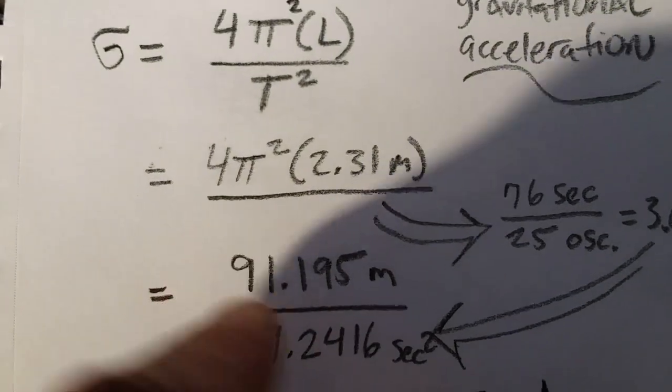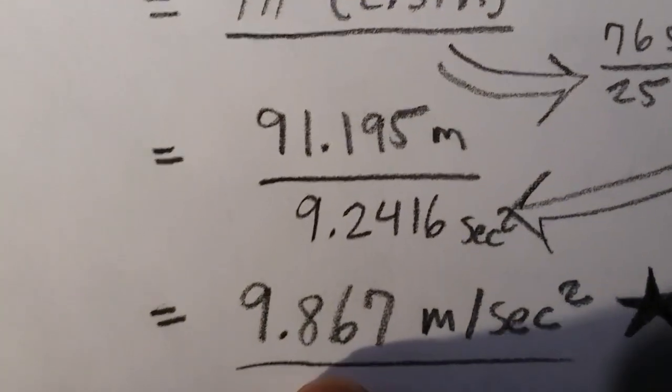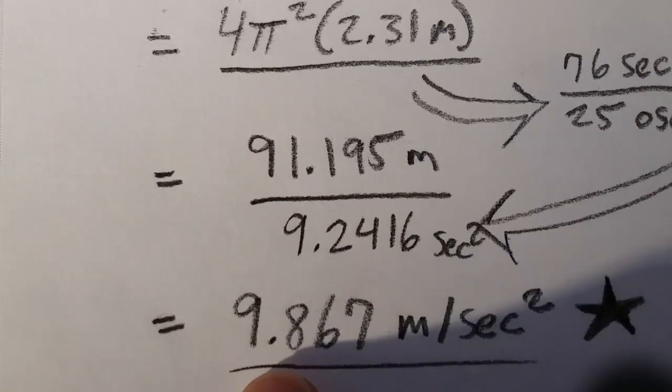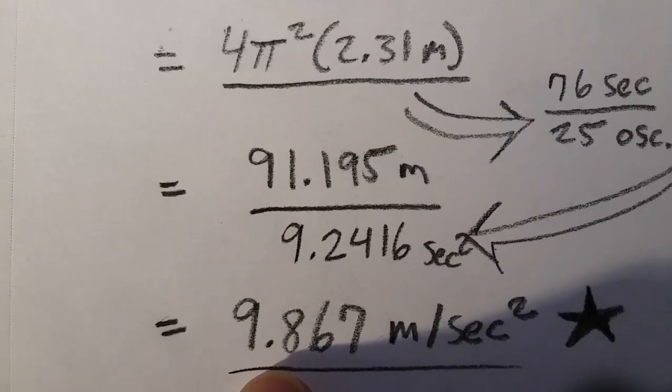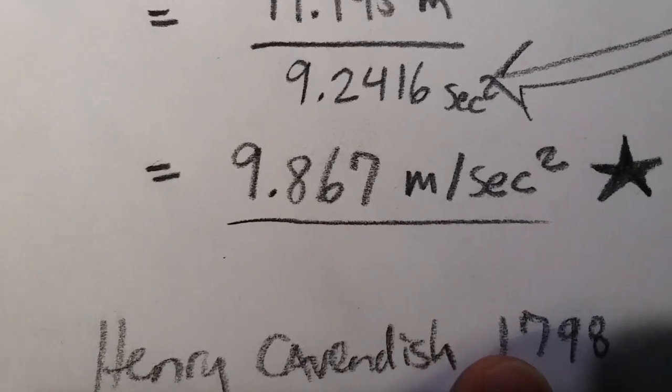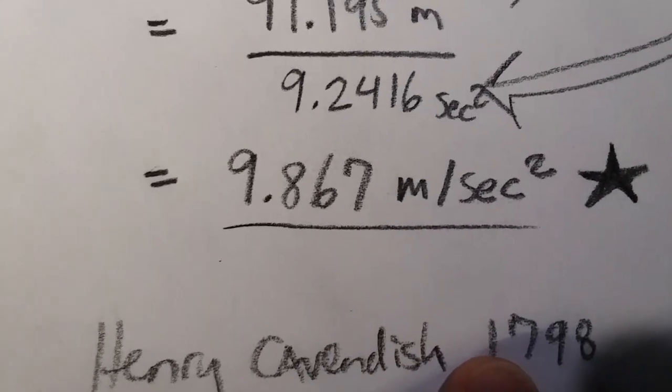Regardless, for now, this is what we've got, and I've calculated this to 9.867 meters per second squared. Pretty cool, as that is the gravitational constant that Henry Cavendish identified in 1798.